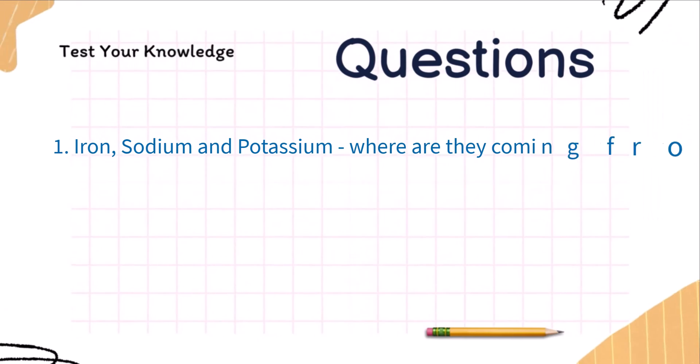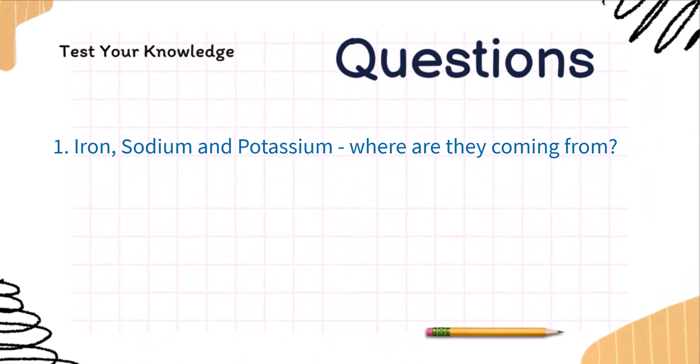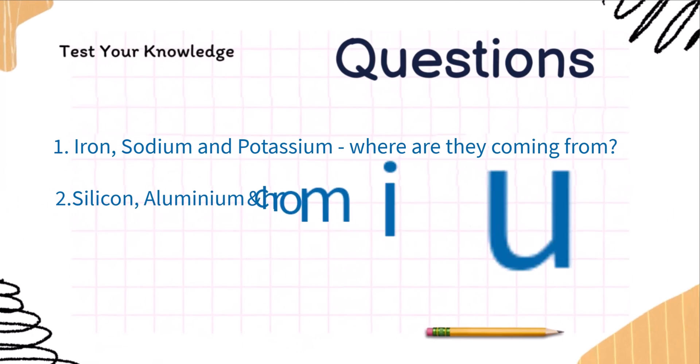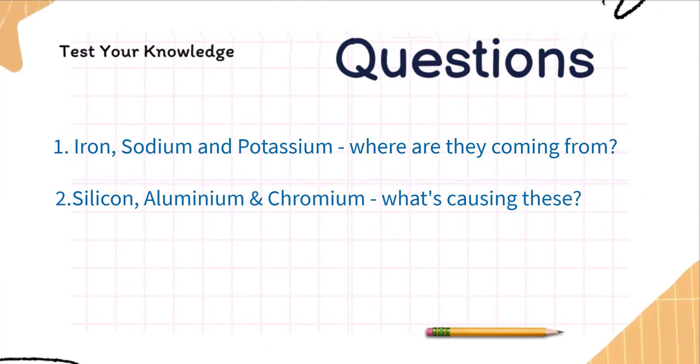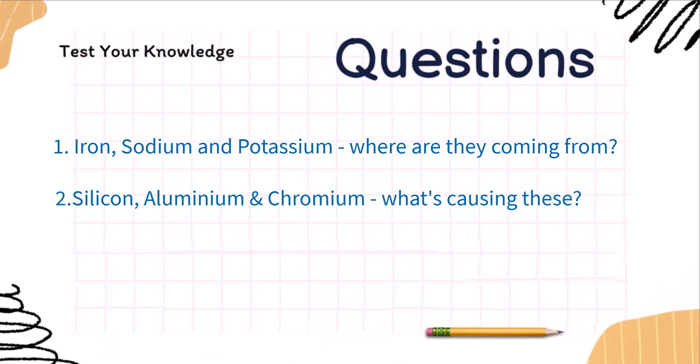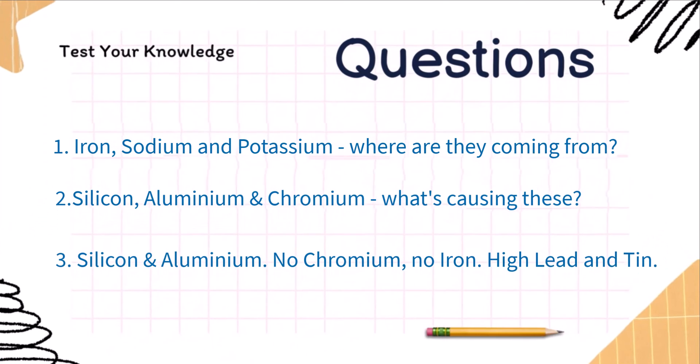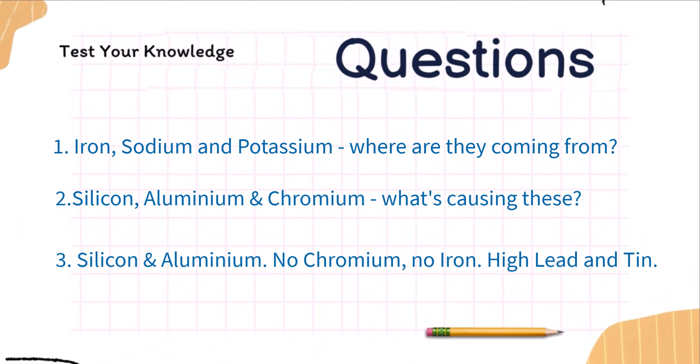One, if I have iron, sodium and potassium in my engine oil where is that likely coming from? Two, I have silicon, aluminium and chromium in my oil. What do you think is happening? And three, for bonus points how would this differ if I had silicon and aluminium but with no chromium, no iron and just lead and tin? Let me know your guesses in the comments.